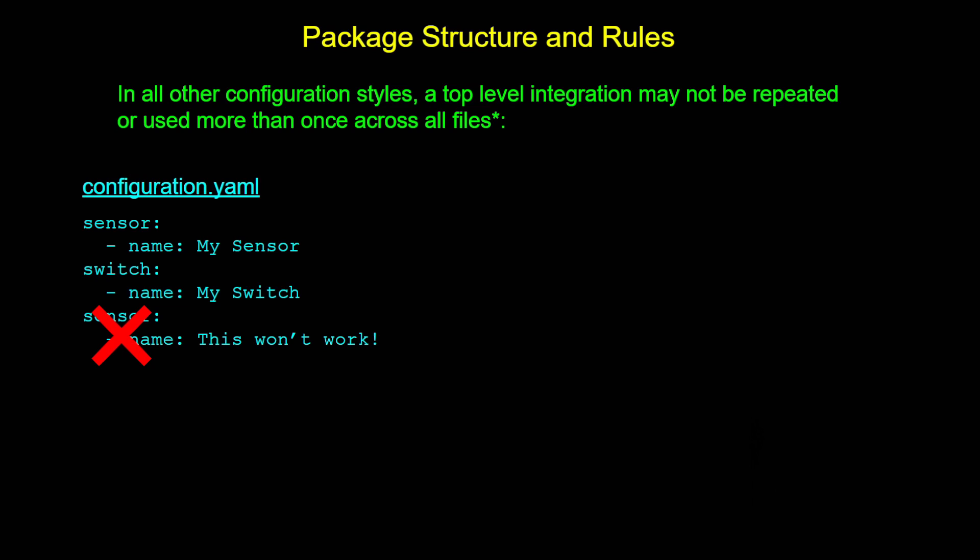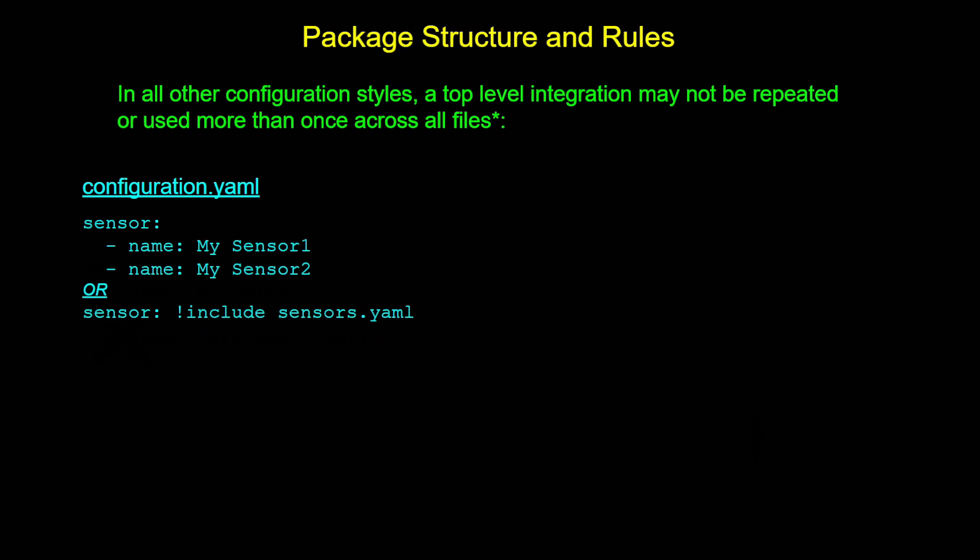Sensor can only appear one time across all of your files. So you really have a couple of choices: put all of your sensors under one header, or split those out into their own YAML file and use an include statement in your main configuration.yaml. There are a couple of minor exceptions to this rule — where you can have more than one include statement by putting a unique identifier on each domain — but as a general rule, you can't repeat these sections.